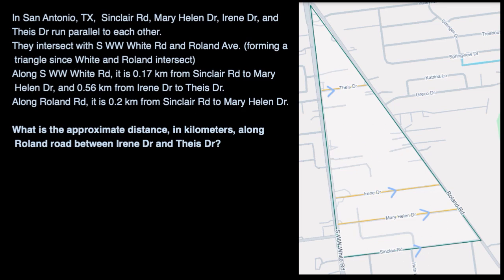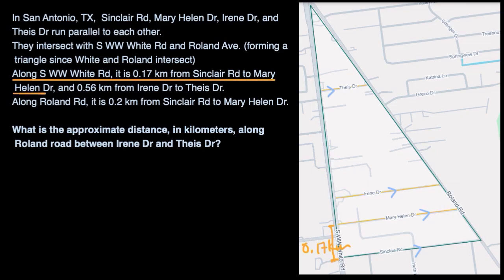Along South W.W. White Road, it is 0.17 kilometers from Sinclair Road to Mary Helen Drive — so this distance right over there is 0.17 kilometers. And it is 0.56 kilometers from Irene Drive to Theus Drive along W.W. White — so this distance right over here is 0.56 kilometers.